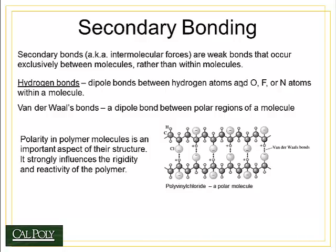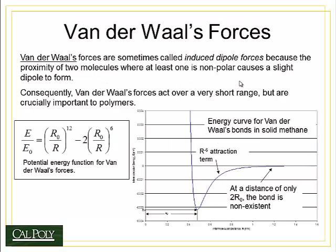A good example of a polymer with van der Waals forces is polyvinyl chloride (PVC), where there is a strong bond between the hydrogen atom in one PVC molecule and the chlorine atom in another. This increase in van der Waals bonding makes PVC very rigid compared to most other polymers of similar structure. Van der Waals forces act over very short ranges because their energy well curve is steep and not very deep — meaning the bonds are relatively weak and only extend over a short distance. At a separation of two times the interatomic spacing (2R₀), the bond has essentially disappeared.